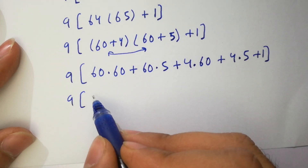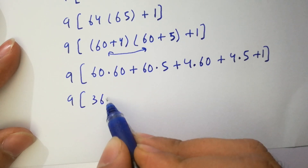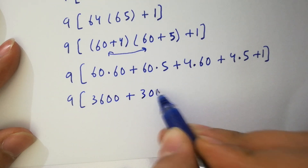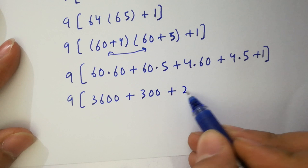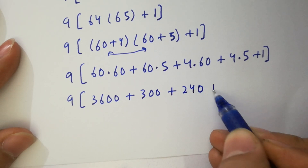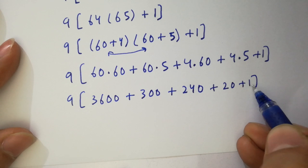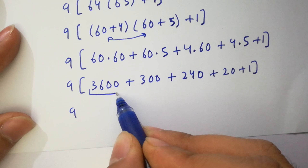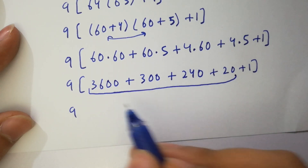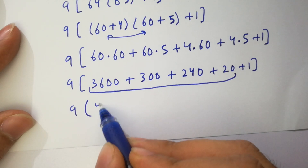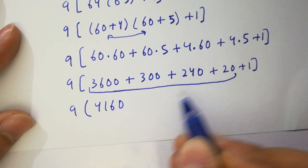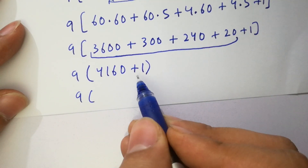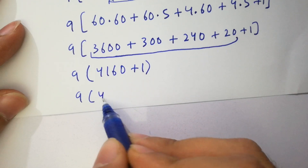So: 6 times 6 is 36, giving 3600; plus 4 times 6 giving 240; we have 300 from 60 times 5; plus 4 times 5 is 20; plus 1. So 3600 plus 300 plus 240 plus 20 equals 4160, and plus 1 is 4161.